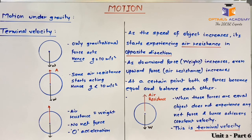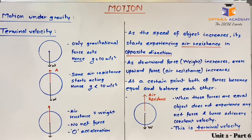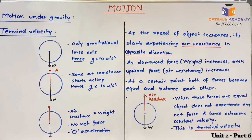Terminal velocity is achieved at the point where upward force (air resistance) becomes equal to the downward force (weight). At that point, the body achieves constant velocity — that constant velocity is terminal velocity. In this video we have learnt about motion under gravity, acceleration due to gravity, weight and mass, gravitational field strength of the earth, and terminal velocity. Thank you.